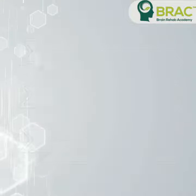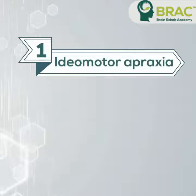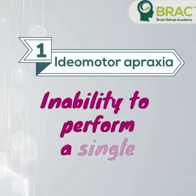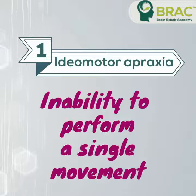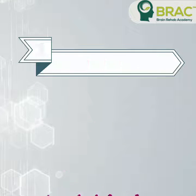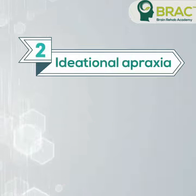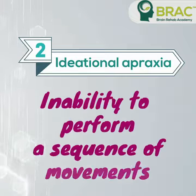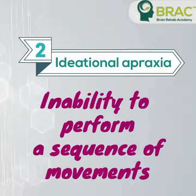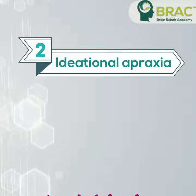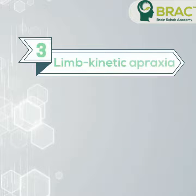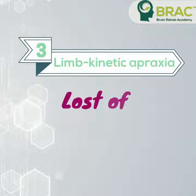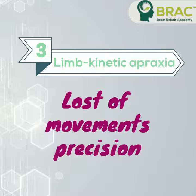Idiomotor apraxia refers to the inability to perform a single movement, whilst ideational apraxia refers to the inability to perform a sequence of movements. In contrast, limb kinetic apraxia refers to the loss of movement precision and the use of the correct movement for the correct action.